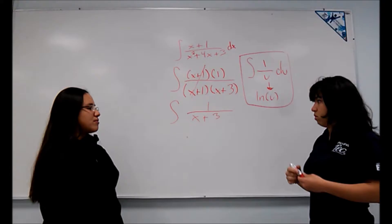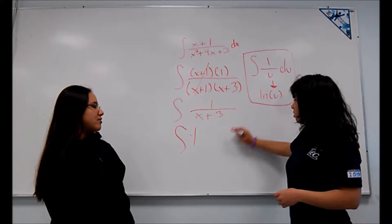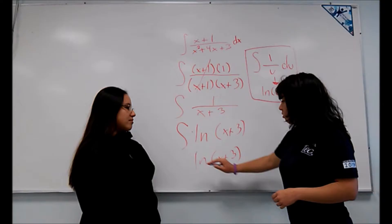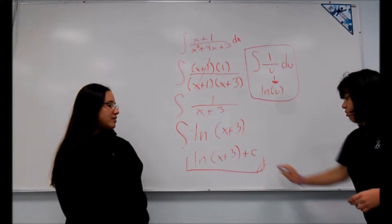In our function, x plus 3 is our u. For the answer, we just need to substitute the u in the formula. We get the natural logarithm of x plus 3 plus c.